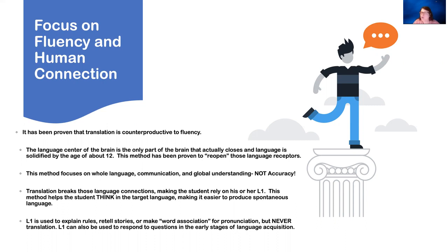I got into a heated discussion with one a couple of years ago because he said it's more important for students to understand right away rather than having to let their brains work for it. And I countered with: studies show that's just not true. Your brain has to work for it, your brain has to process it, and it's okay if they don't understand right away. Translation is instant gratification — it does not promote fluency even in a comprehensible input method. My viewpoint is controversial, but I'm strong in it because I've done the research and studied the science.